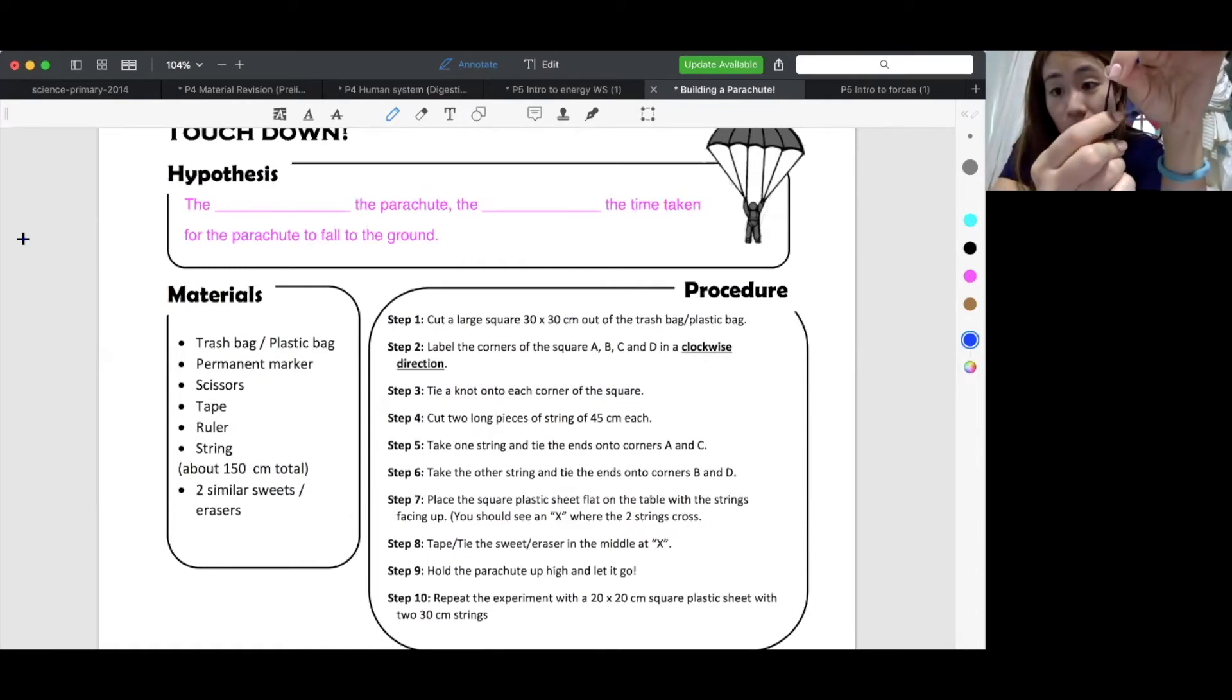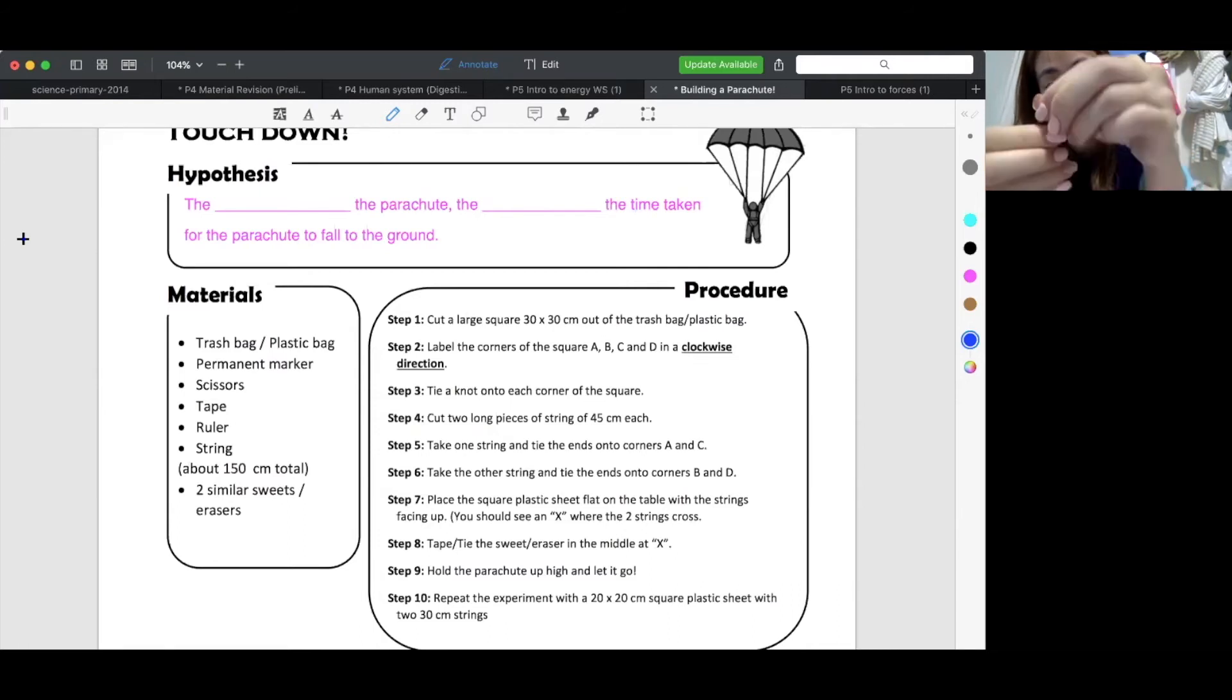I'm going to make sure my knot is only at this very end. Not so in. Please don't put it so in. If it's too in, your parachute will be very small. Then there's no point cutting a 30 by 30 square. So I take this. What do I do to tie the knot easier? I twist it. Twist it so it's much easier to tie the knot.